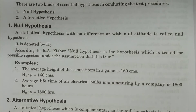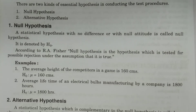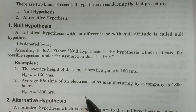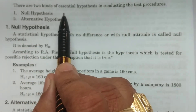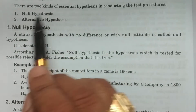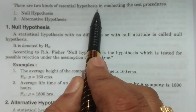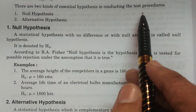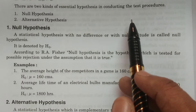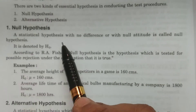Welcome to BSc Statistics. In this lesson, I explain two important definitions of statistical hypothesis: null hypothesis and alternative hypothesis. These two hypotheses are very essential because there are two kinds of essential hypotheses in conducting test procedures.